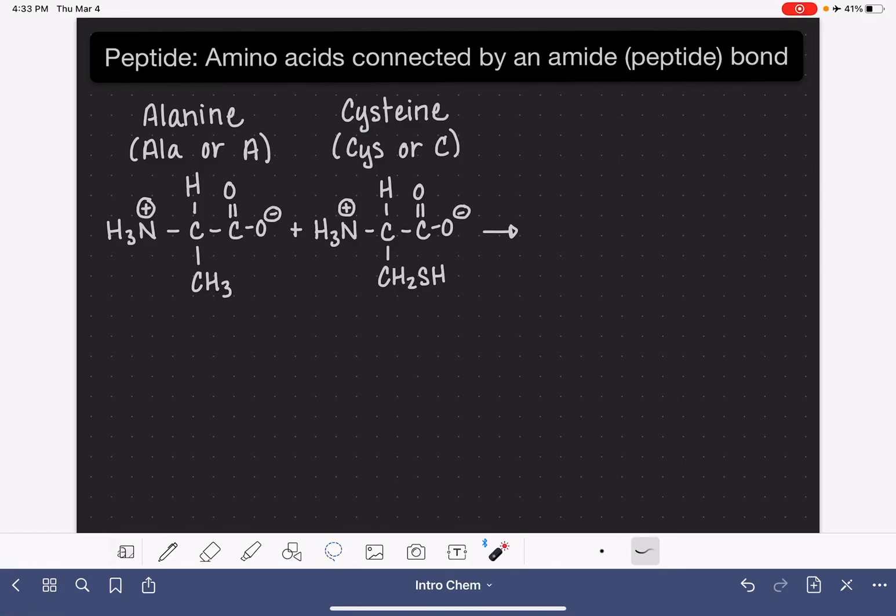A peptide is two or more amino acids that are connected by an amide bond, which is also called a peptide bond. In this video, I'm going to show you how to connect two amino acids together to form a peptide.